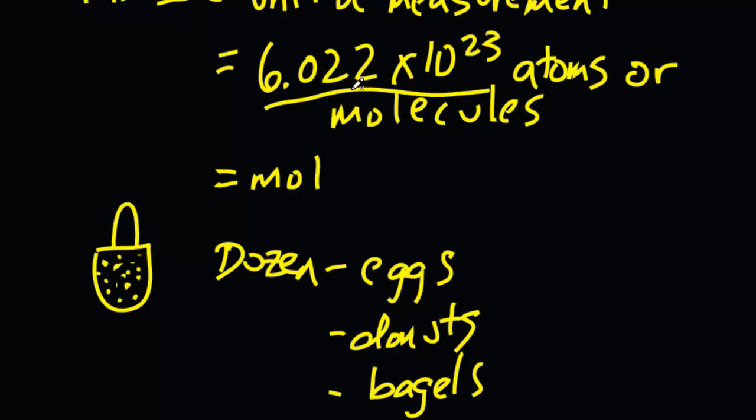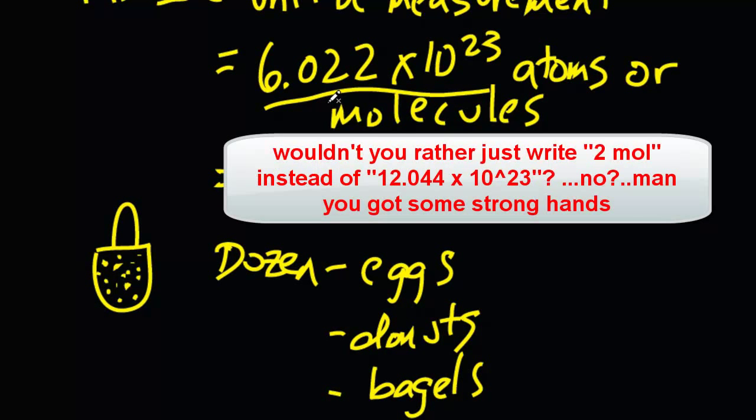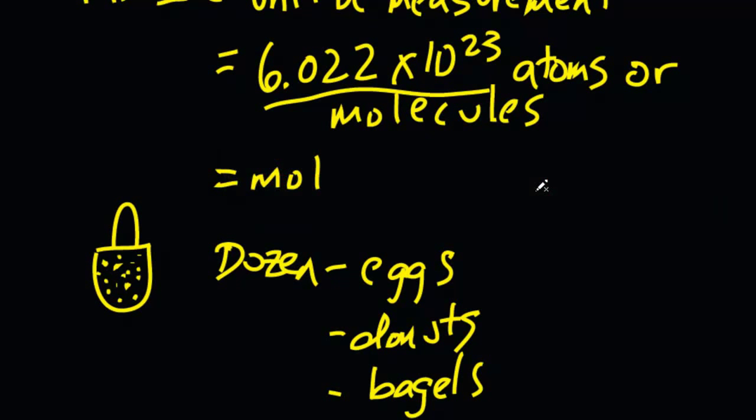So 2 moles would just be double this Avogadro's number, 12.044 times 10 to the 23rd atoms or molecules. If you wanted to specify the exact number of how many atoms or molecules you have, and so on.